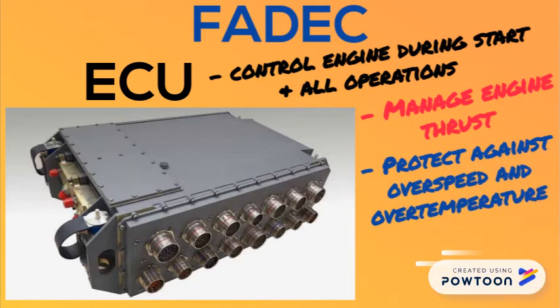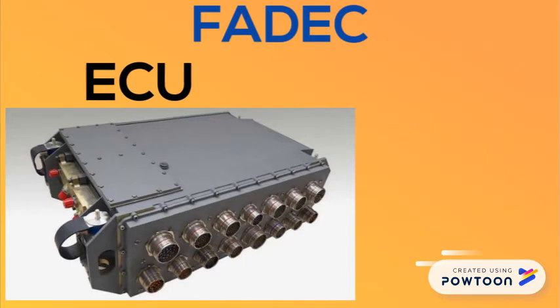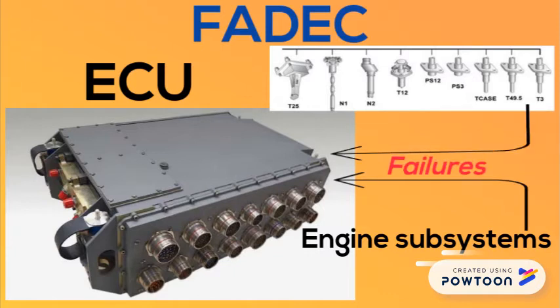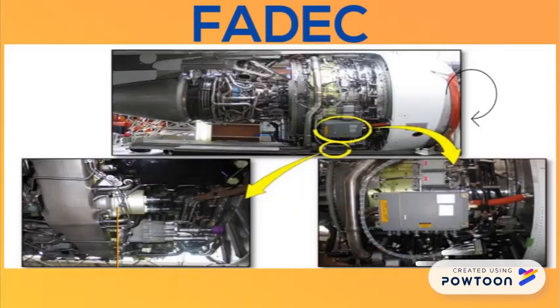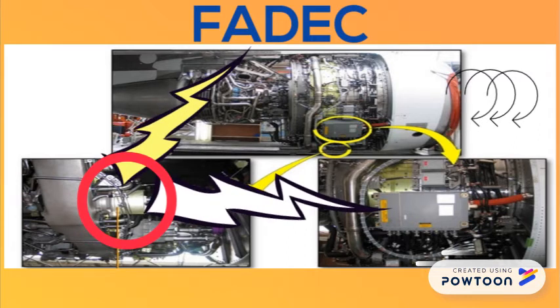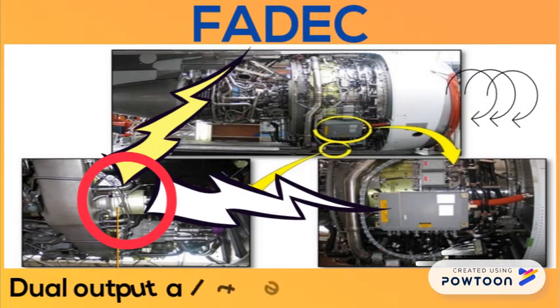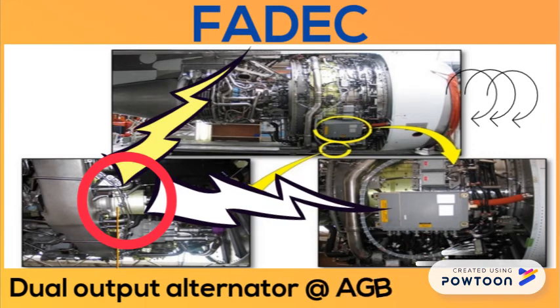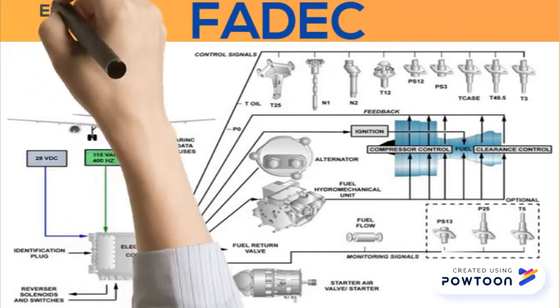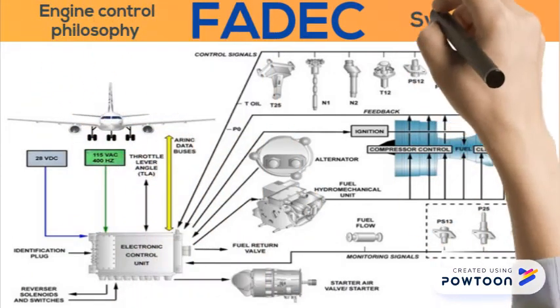The electronic control unit manages engine thrust and protects against overspeed and over temperature by controlling the engine subsystems. The electronic control unit also monitors all engine subsystems and sensors for failures. When the engine is running, power for FADEC operation is supplied by a dual-output FADEC alternator located on the accessory gearbox and driven by the accessory gearbox. The FADEC is an engine control philosophy, or it is a system.